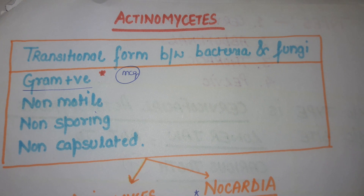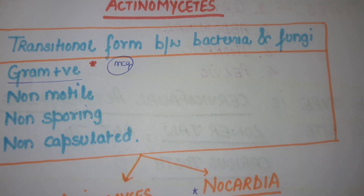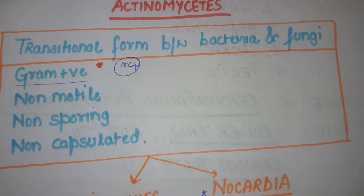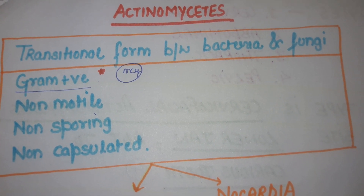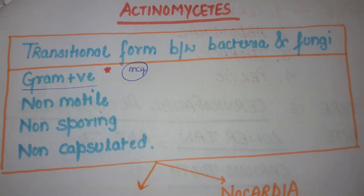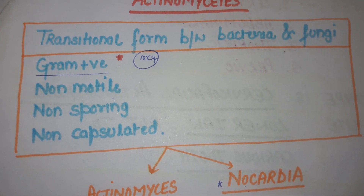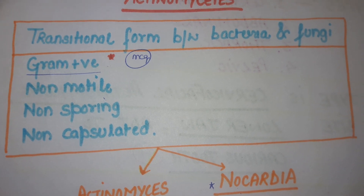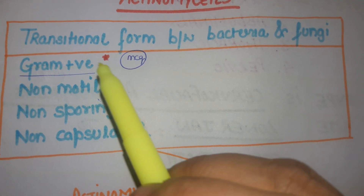These are the transitional form of organisms between the bacteria and fungi. So Ectanomycetes — they are neither bacteria nor fungi. It's an in-between form. These are gram-positive, non-motile, non-sporing, and non-capsulated organisms.